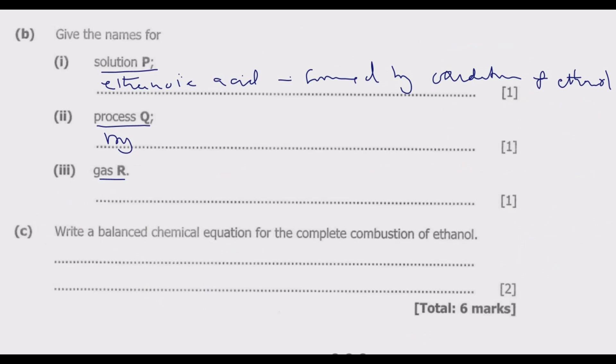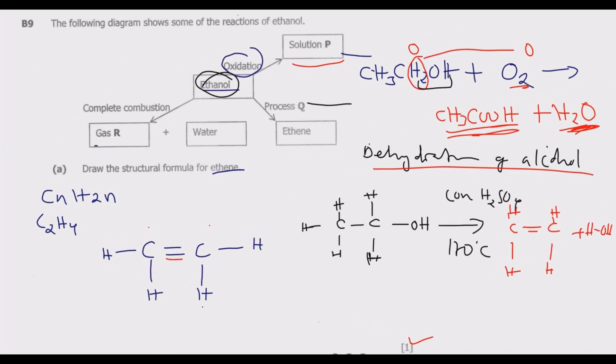Now gas R. For gas R, what is happening is we are burning ethene in oxygen because it's complete combustion. We have ethene, which is a liquid, and we completely burn it in the presence of excess oxygen, which is a gas. We get carbon dioxide, which is a gas, plus water, which is liquid. So gas R is carbon dioxide.